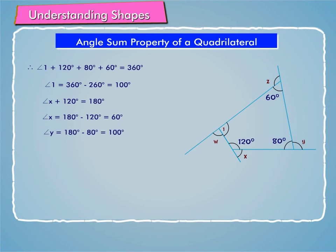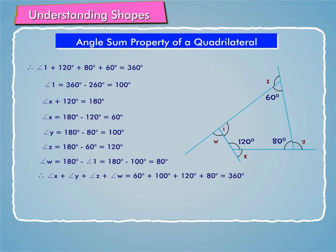Similarly, angle Y is equal to 180 degrees minus 80 degrees, which is equal to 100 degrees. Angle Z is equal to 180 degrees minus 60 degrees, which is equal to 120 degrees. And angle W is equal to 180 degrees minus 100 degrees, which is equal to 80 degrees. Hence, angle X plus angle Y plus angle Z plus angle W is equal to 60 degrees plus 100 degrees plus 120 degrees plus 80 degrees, which is equal to 360 degrees.